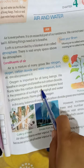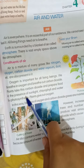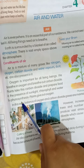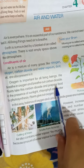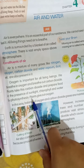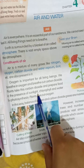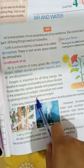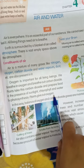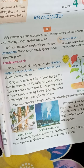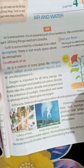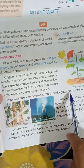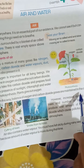Plants take this carbon dioxide and prepare food in the presence of sunlight, chlorophyll, and water by photosynthesis. Plants give out oxygen in this process.